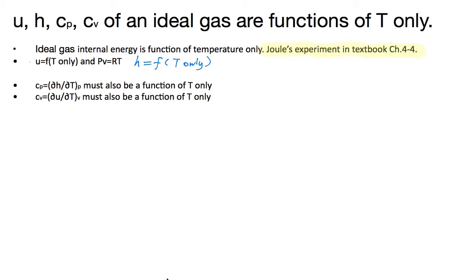Then, because enthalpy and internal energy are both functions of temperature only, we can see that due to the general definition of C_P and C_V as the derivative of H and U with respect to T, when you keep pressure or volume constant, these specific heats must also be a function of temperature only for ideal gases.